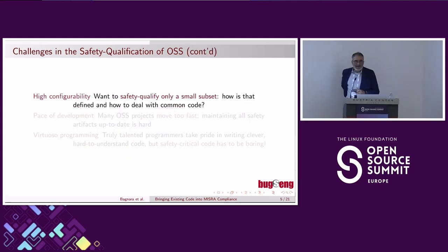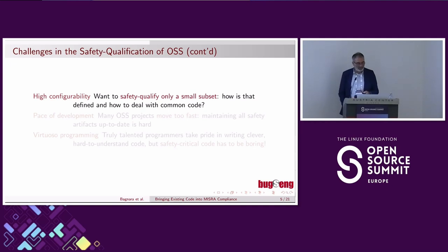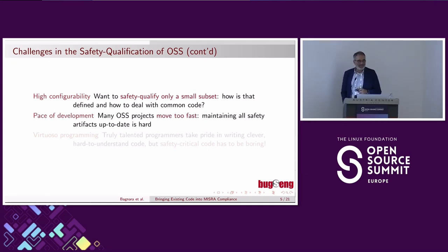Another challenge is high configurability. You typically want to safety qualify only a small subset and a specific configuration, because it costs a lot — we are talking about hundreds to thousands of requirements and tens of thousands or more tests to be developed. How do you define that subset, and how do you deal with common code? Part of the common code may be assigned to maintainers who don't care about safety qualification. And the pace of development is another issue: many open source projects are very quick, and maintaining up-to-date safety artifacts can be very challenging.